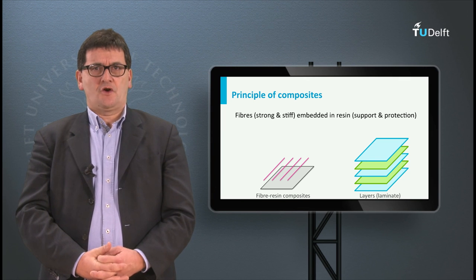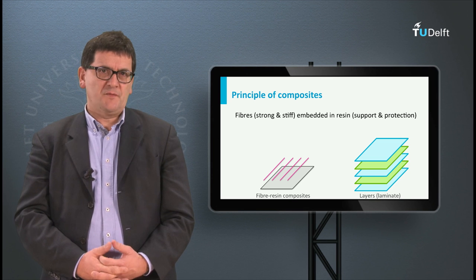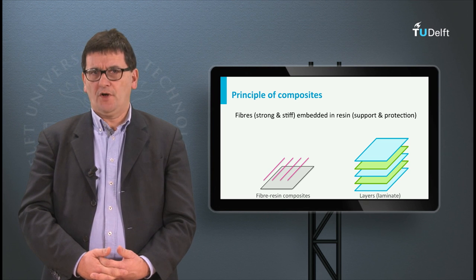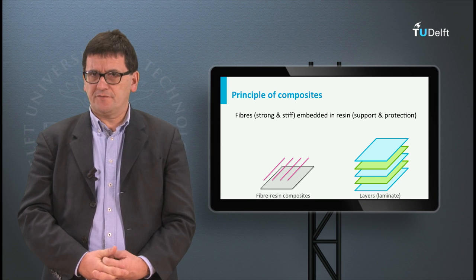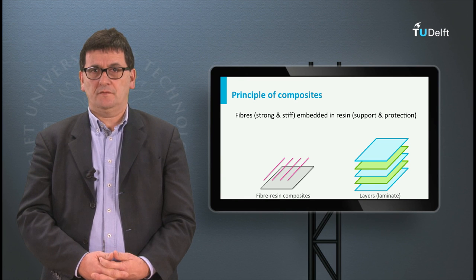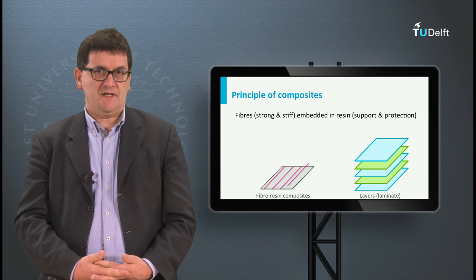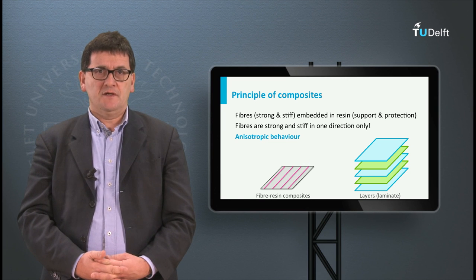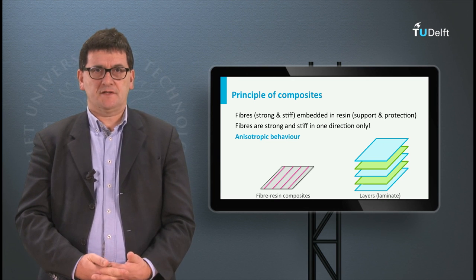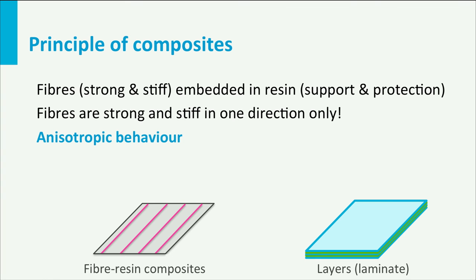The fibers and the polymer resin in a composite have different functions. The fibers are strong and stiff, so the mechanical properties of a composite are dominated by the fibers. The fibers are embedded in a polymer resin, which provides protection for the fibers, support for the fibers, and transfers loads between the fibers. Fibers are strong and stiff in one direction only — the length direction — meaning that one layer with continuous fibers will be anisotropic. A composite usually has multiple layers, and the orientation of those layers in a composite laminate determines the degree of anisotropy of the laminate.